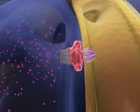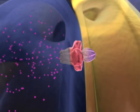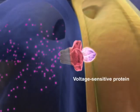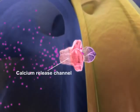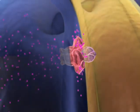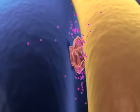As an action potential travels down the T-tubule, it causes a voltage-sensitive protein to change shape. This shape change opens a calcium release channel in the SR, allowing calcium ions to flood the sarcoplasm.